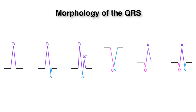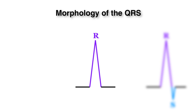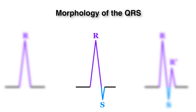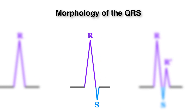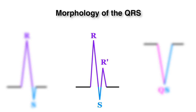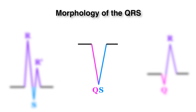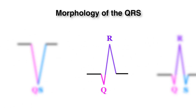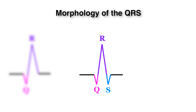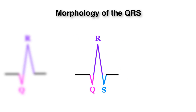You can describe a QRS complex according to its morphology. For example, the proper nomenclature of these complexes is as follows: This is an R complex. Here is an RS complex. Here is an RSR prime. Here is a QS complex, a QR complex, a QRS complex.